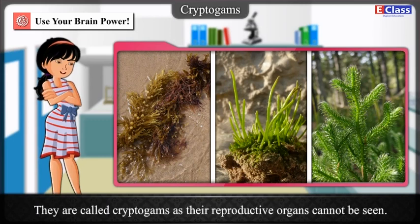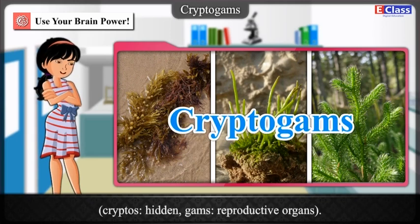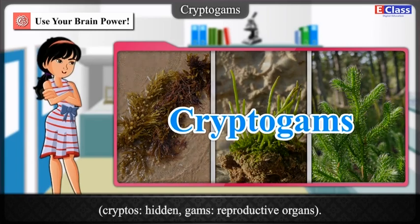The similarity between Thallophyta, Bryophyta, and Pteridophyta, irrespective of differences in their body structures, is that all these plants reproduce by spore formation. They are called cryptogams as their reproductive organs cannot be seen. 'Cryptos' means hidden and 'gamos' means reproductive organs.